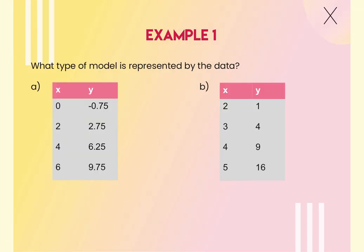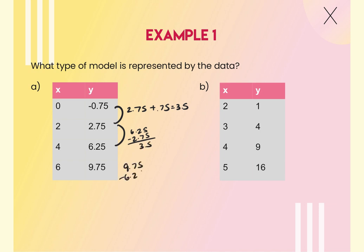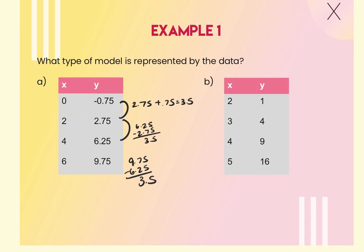Looking at example A: first check that x-values go up in equal increments — they do, just not by ones. Then find the first difference: 2.75 minus negative 0.75 is 3.5, 6.25 minus 2.75 is 3.5, 9.75 minus 6.25 is 3.5. The first differences are constant, so this is a linear model.